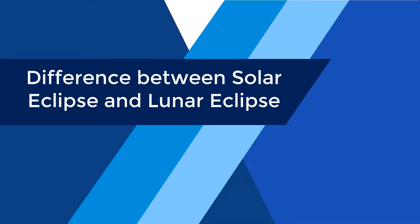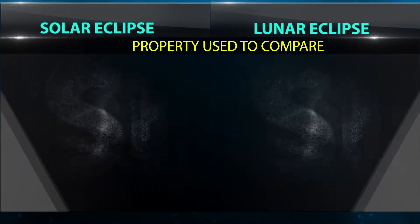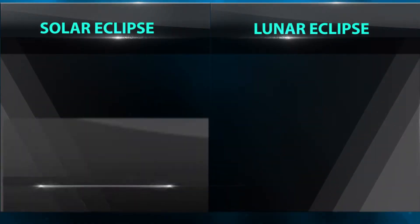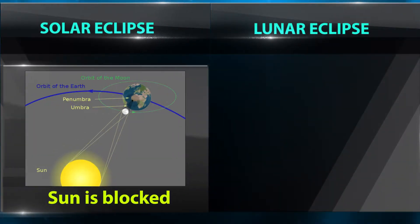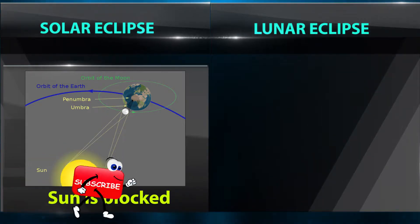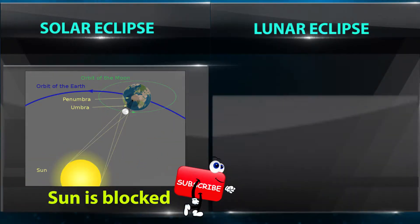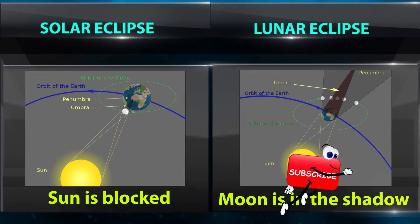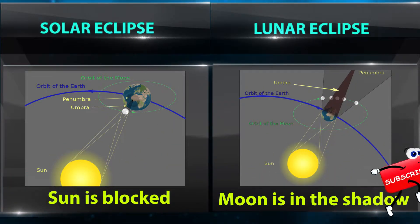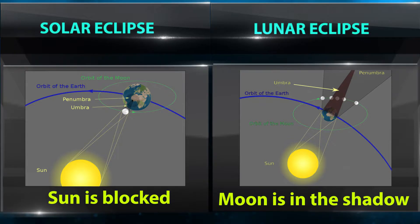Difference between Solar Eclipse and Lunar Eclipse. Sun is blocked in Solar Eclipse. Moon is in the shadow in Lunar Eclipse.